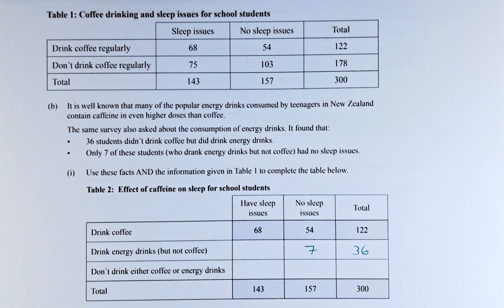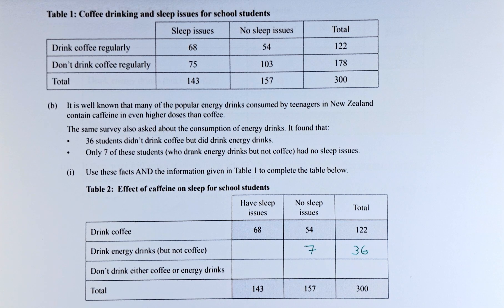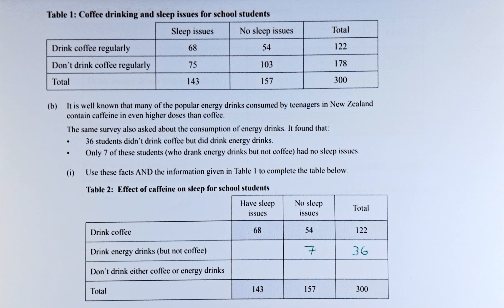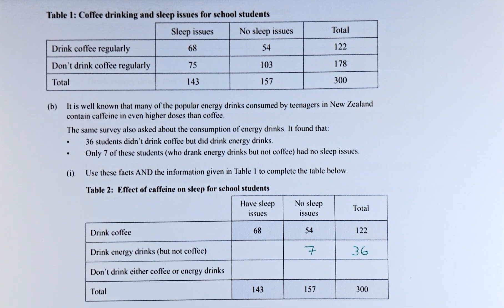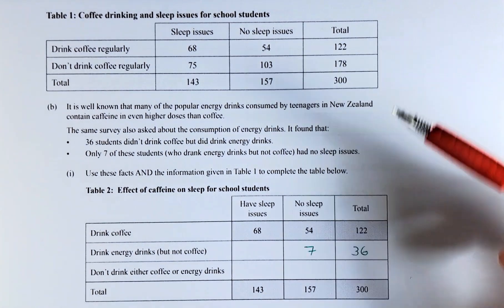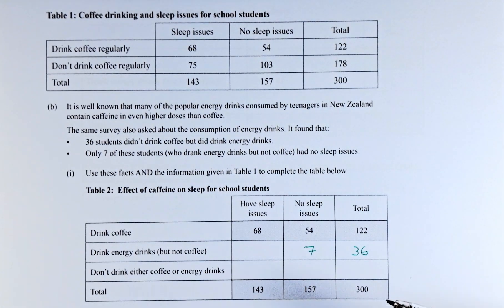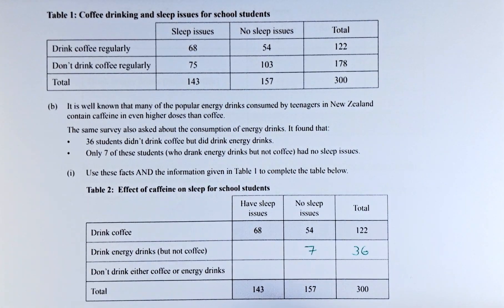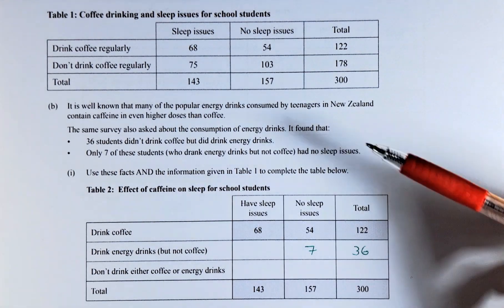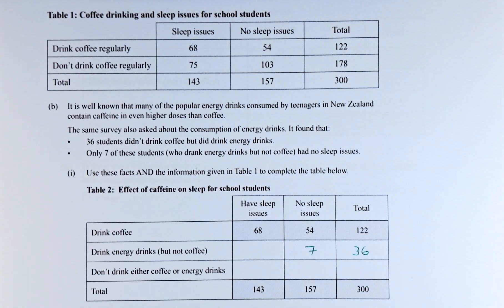Good day! In this video, we are going to try to solve question 1B of the 2021 NCA Level 2 probability methods question. The first table is found from question 1A and this is a replica of that table. So we are going to continue with 1B.